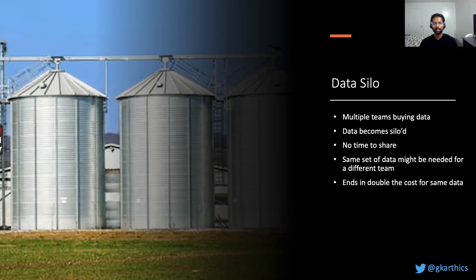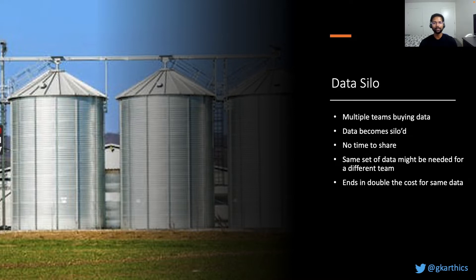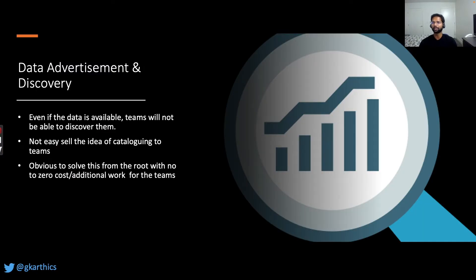Starting with data silos — in a larger enterprise organization, there will be many different teams working independently, each with their own buying power. When multiple teams buy data from the market independently, they forget to let the rest of the organization know. This results in departments buying the same data, leading to duplicated contracts, duplicated costs, and duplicated effort. The data bought becomes siloed within each department, and the same dataset might be needed by a different team, ending up in double costs for the same data.